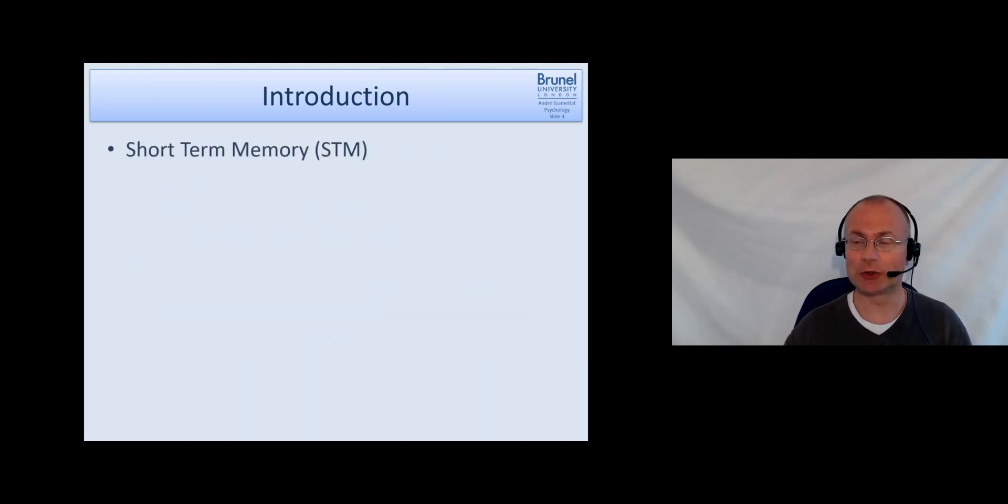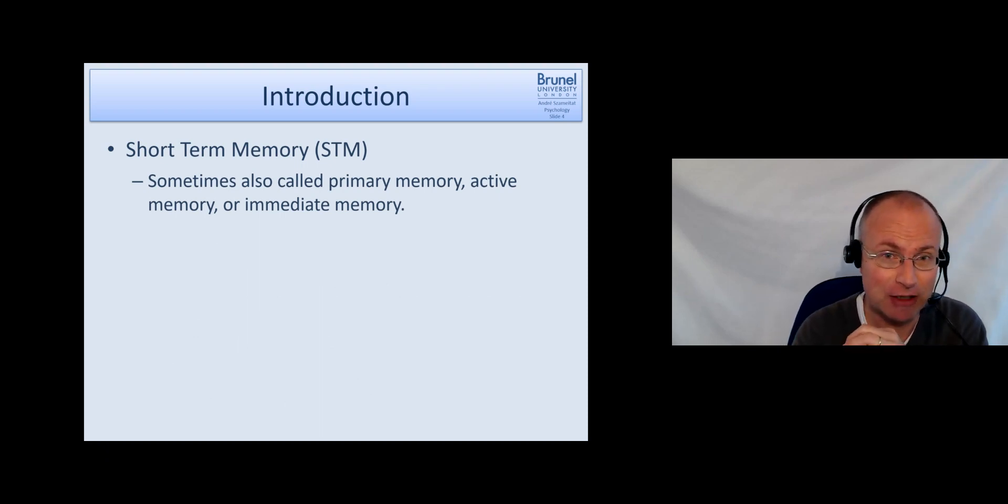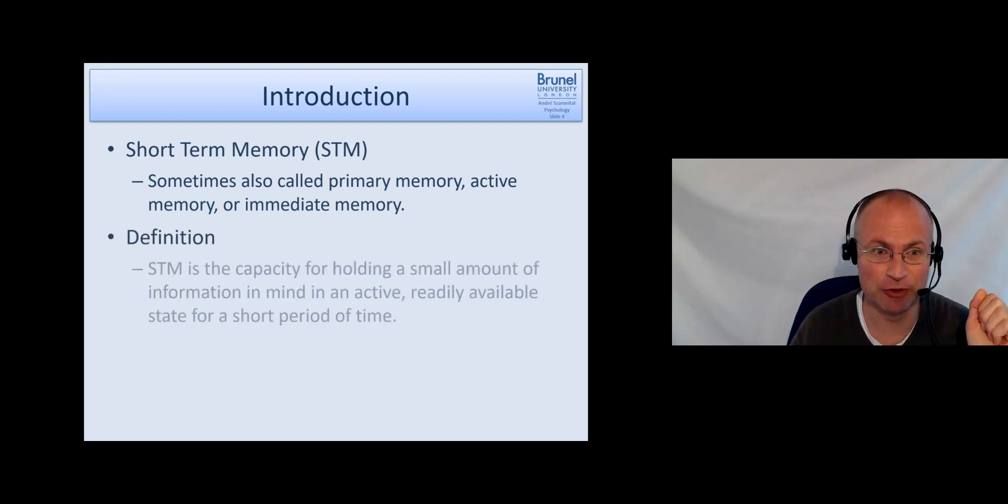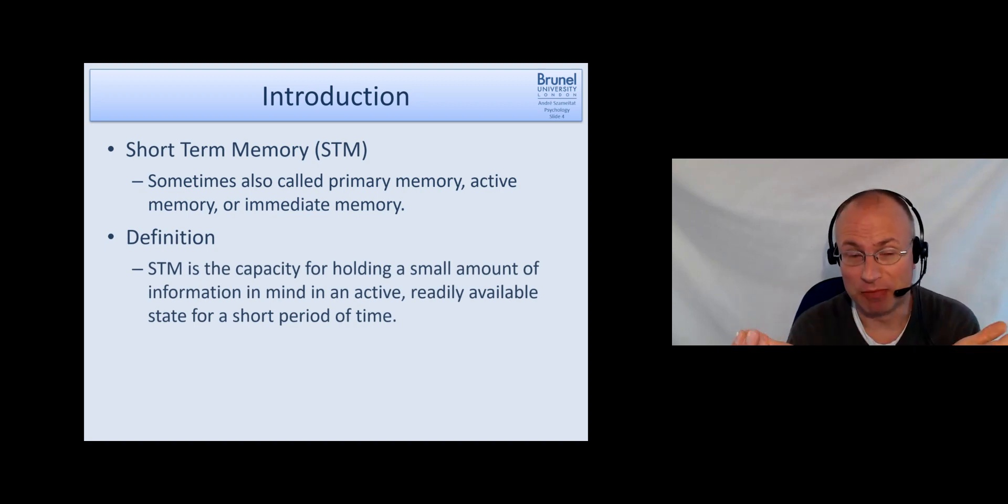Okay, so short-term memory. There are other terms for that, synonyms. It's also called sometimes primary memory or active memory or immediate memory. Some people also call it working memory, but as you will see later, I would say that nowadays there's a slightly different meaning to working memory as compared to short-term memory. Working memory also contains short-term memory but has additional elements to it. The definition for short-term memory would be that short-term memory is the capacity for holding a small amount of information in mind in an active, readily available state for a short period of time.